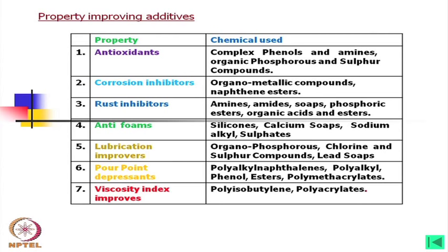The first additive property: antioxidant — for that, complex phenols and amines, organic phosphorus and sulfur compounds are used. Corrosion inhibitors — organic metallic compounds and naphthenic esters are used. Rust inhibitors — amines, soaps, phosphoric esters, organic acids and esters.